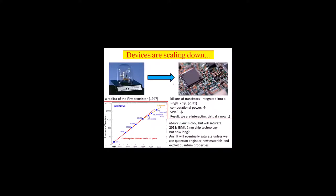We all know about the fascinating world of nanoelectronics and how things have scaled down over the years. This is a replica of the first transistor from more than 50 years ago. Today, we have billions of transistors integrated in a single chip. Not only has computational power increased, but SWAP—size, weight, and power dissipation—has decreased significantly. That's why we are interacting now.